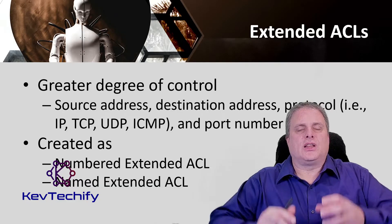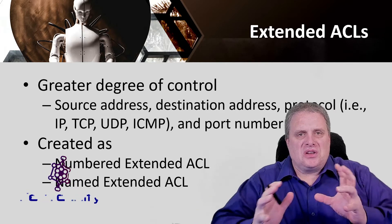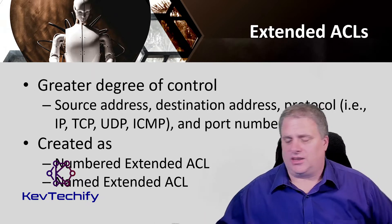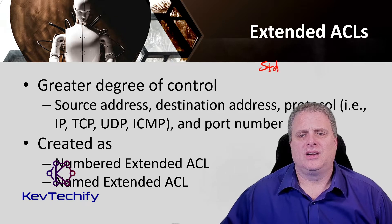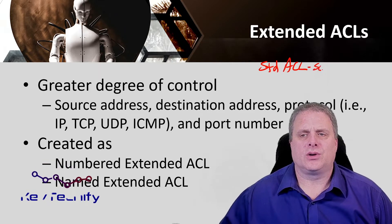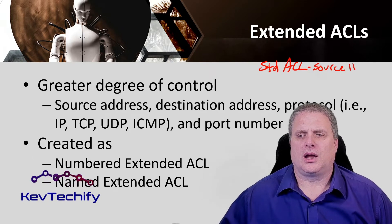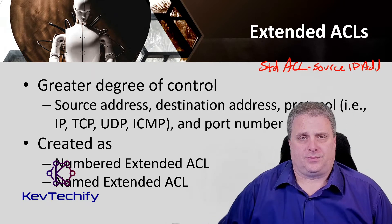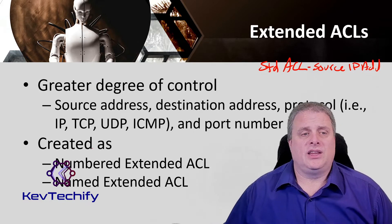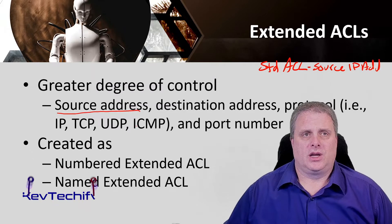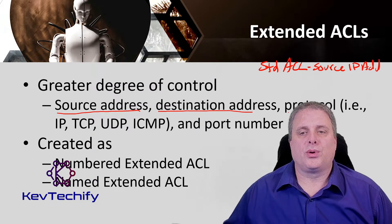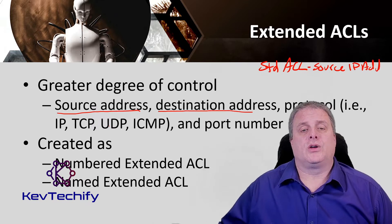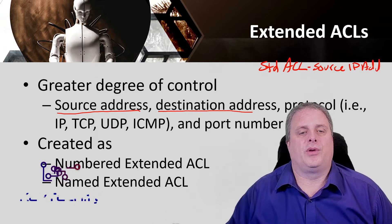Access control lists allow you a greater degree of flexibility in controlling what you're allowing or not allowing through your network than a standard ACL. A standard ACL only looked at the source IP address. What an extended ACL does is it looks at the source IP address, but it also can look at the destination address. It can look at the protocol — meaning IP, TCP, UDP, ICMP — and it can also look at the layer 4 port number.